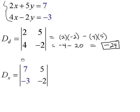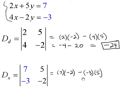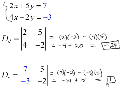Let's find the numerator of x. We replace the x coefficients — the 2 and the 4 — with the constants, 7 and negative 3, and leave the rest of the matrix unchanged. Then we multiply the product of the diagonal going down, 7 times negative 2, minus the product of the diagonal going up, negative 3 times 5. That's negative 14, and we're subtracting a negative 15, so that becomes positive 15. Negative 14 plus 15 is 1 — that's our numerator of x.